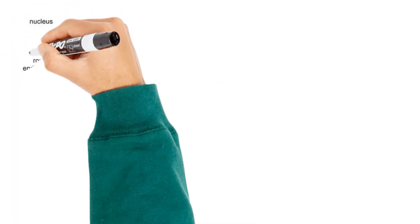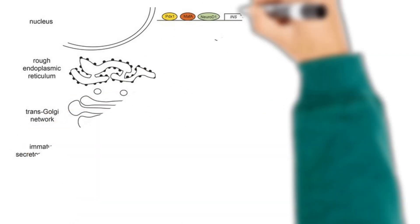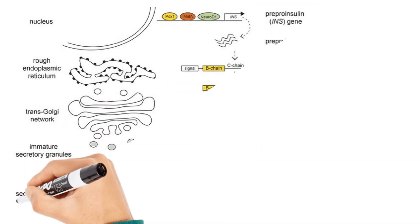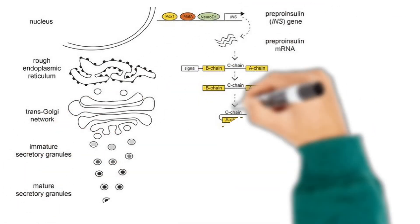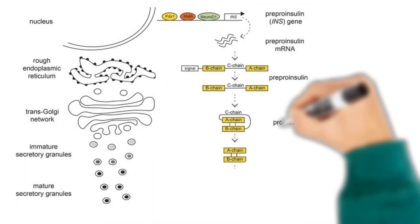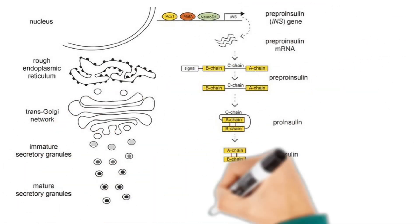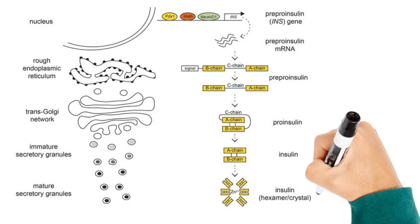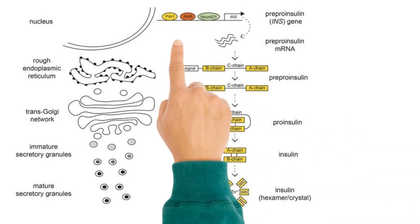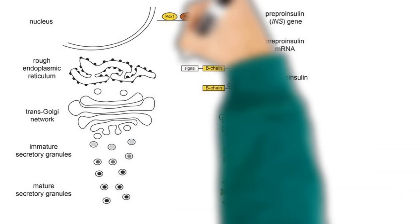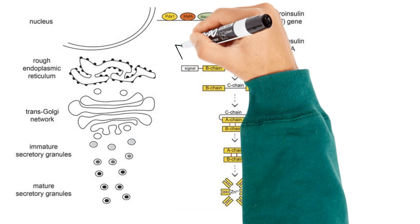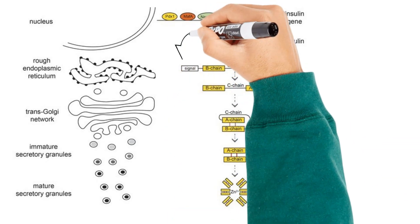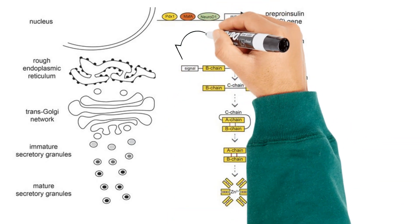Insulin messenger RNA (mRNA) is translated into a single-chain precursor molecule called pre-pro-insulin, which consists of a signal peptide, B-chain, C-peptide, and A-chain.